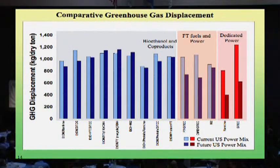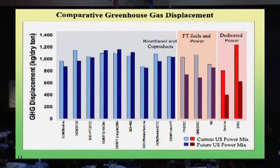In terms of greenhouse gas displacement, there's a lot more similarity than differences here. It depends a bit on what scenario you are comparing to — current, for example, displacing current power versus a potential future renewables-intensive power mix. But the point is that from a greenhouse gas emission displacement point of view, the liquid fuel options are more or less the same as the power option. Unless you spend a lot of fossil fuels making the wheel go round, any process based on photosynthesis is a potentially sustainable carbon cycle, and many processes come very close to realizing that potential.